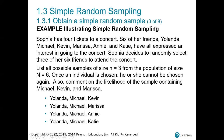Here's an example: Sophia has four tickets to a concert. Six of her friends — Yolanda, Michael, Kevin, Marissa, Annie, and Katie — have all expressed interest in going. Sophia decides to randomly select three of her six friends to attend. We need to list all possible samples of size three from the population of six, noting that once an individual is chosen, they cannot be chosen again for that sample.